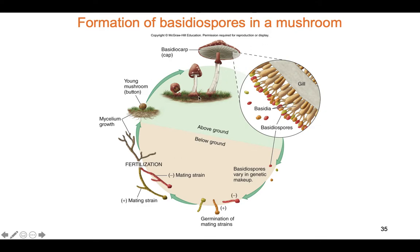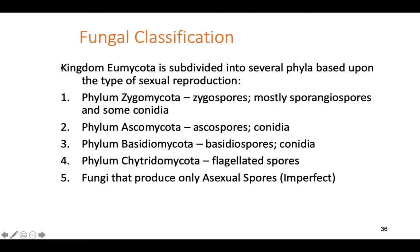Different species of fungi form different types of spores in different ways. This is a basidiocarp mushroom that produces spores on the undersides. The spores land on the ground, form new hyphae, the hyphae mate, and a new mushroom grows — with different DNA and different types of spores, shaking up genetic variability. The different classifications of fungi are based on what types of spores they have and how they form them.